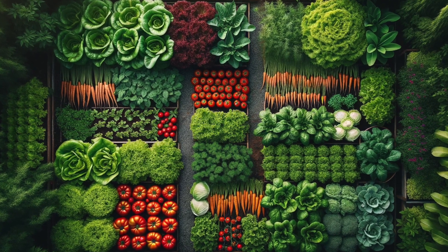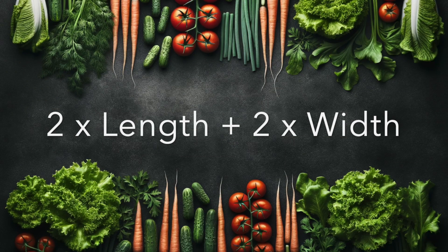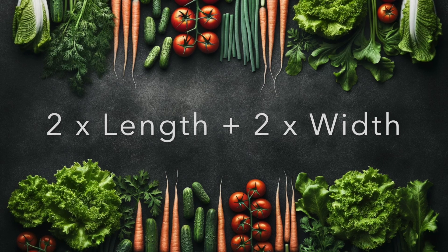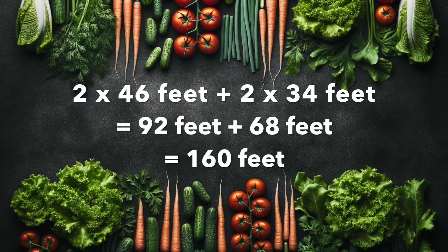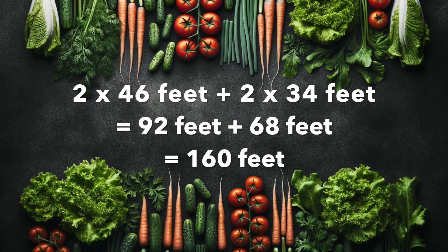To solve this, we'll find the perimeter of the rectangle. The formula for the perimeter is 2 times the length plus 2 times the width. Let's do the math. 2 by 46 feet plus 2 by 34 feet equals 92 feet plus 68 feet equals 160 feet.